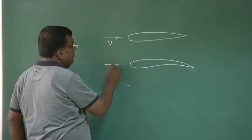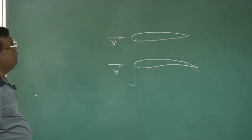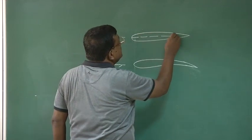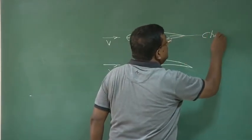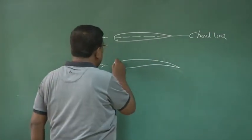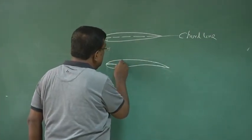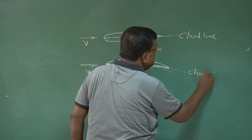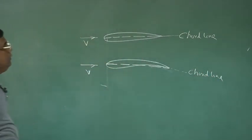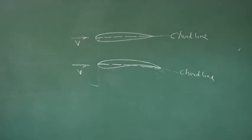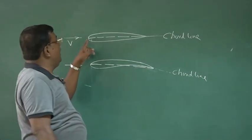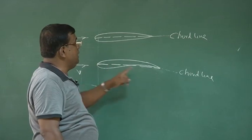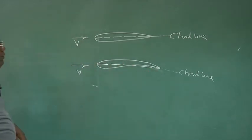If this is the V and this is the chord line, and if I join this, this is the chord line. Remember, the chord line is defined as: if you join the leading edge and trailing edge by a straight line, that becomes the chord line. When the leading edge and trailing edge are joined, that becomes the chord line for a cambered aerofoil.